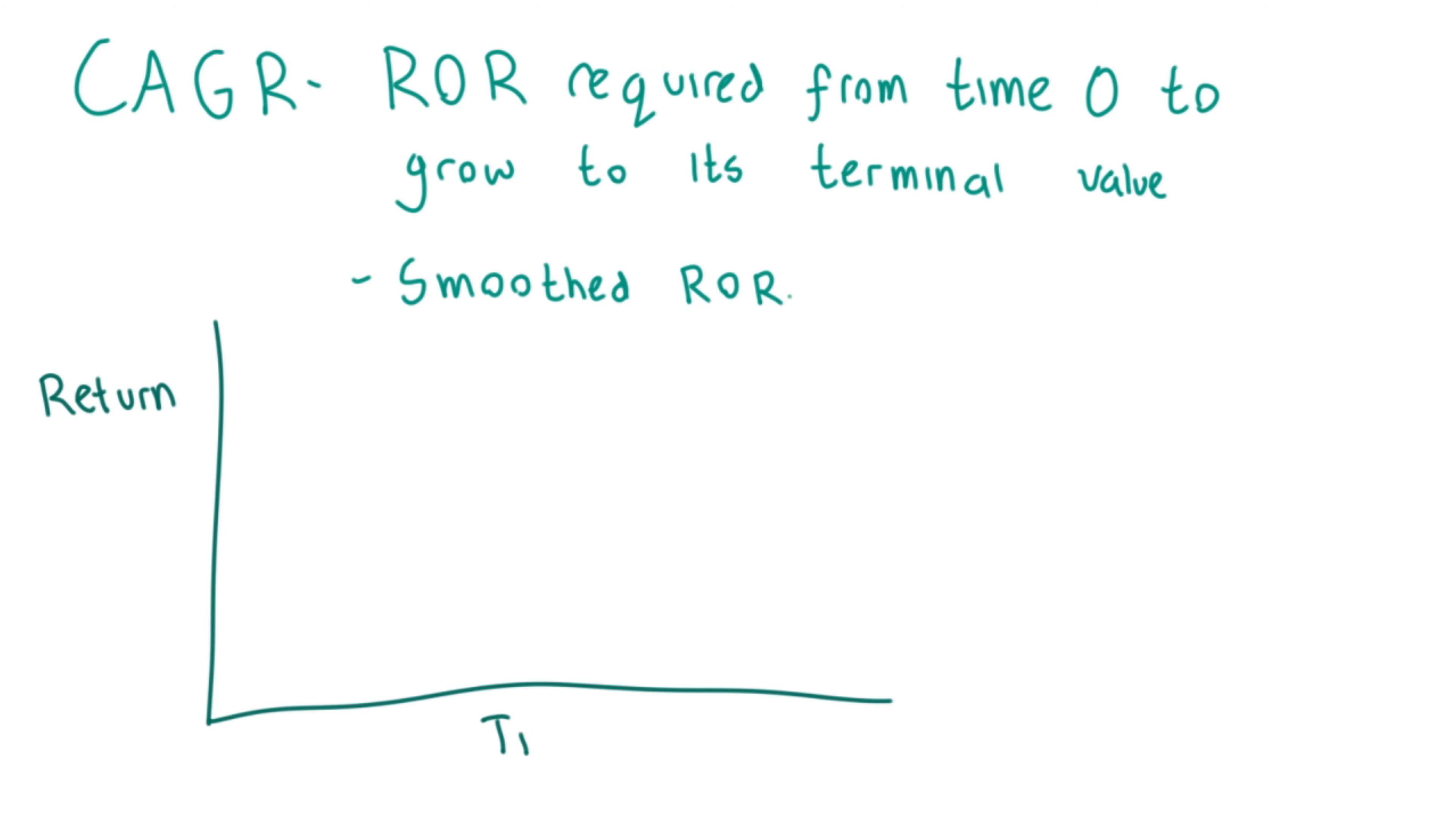We can use the CAGR as a comparison tool between two stocks that may have different lengths of price history or holding periods to determine which generated a greater return on an annualized basis. It's important to note that the CAGR completely ignores the volatility or risk of these returns. We'll have a brief look at volatility in the next video.